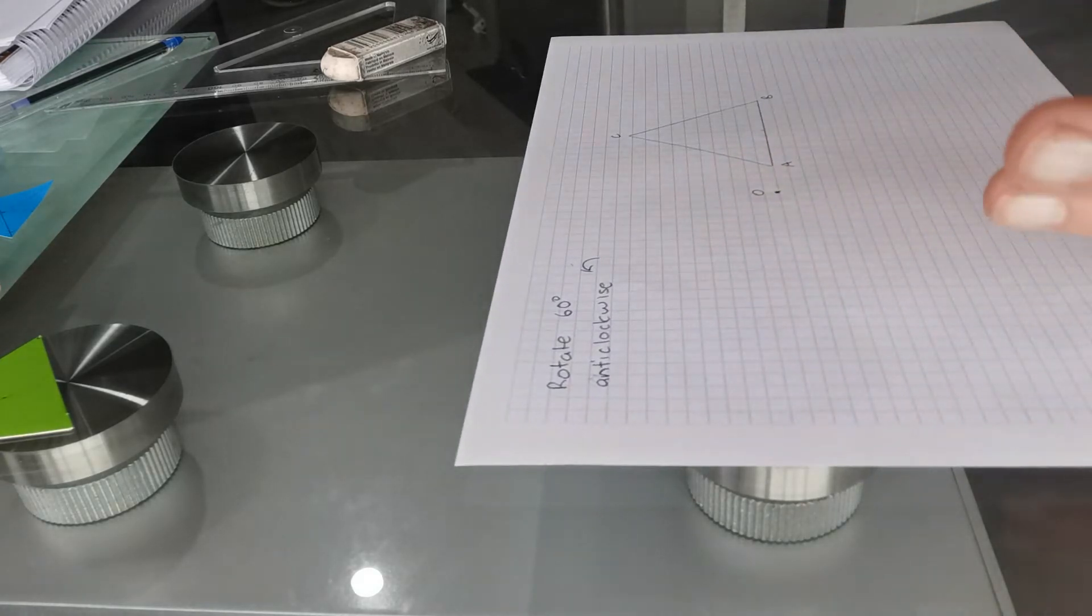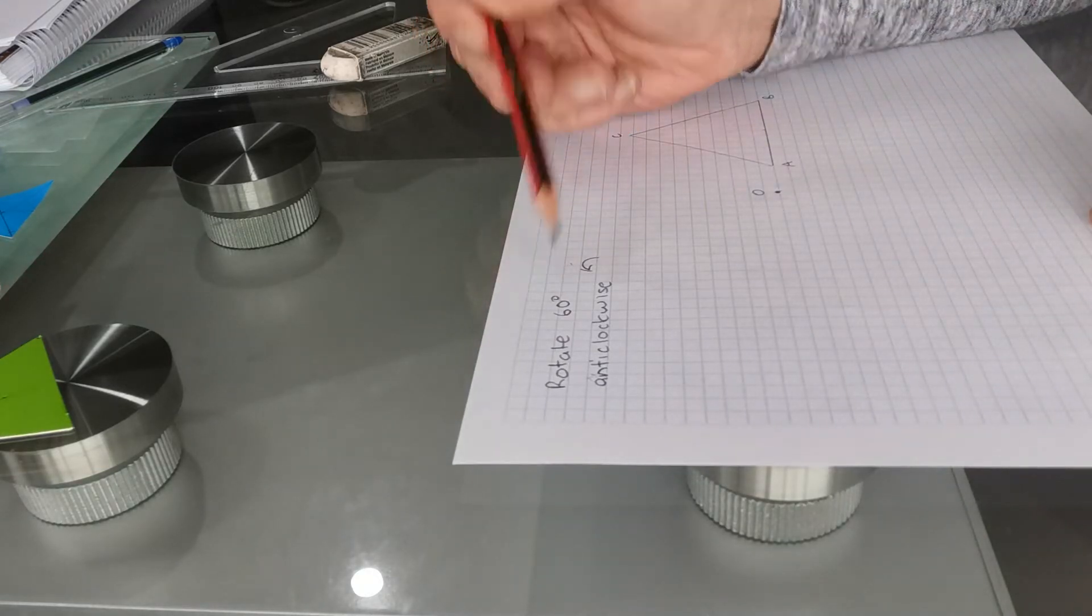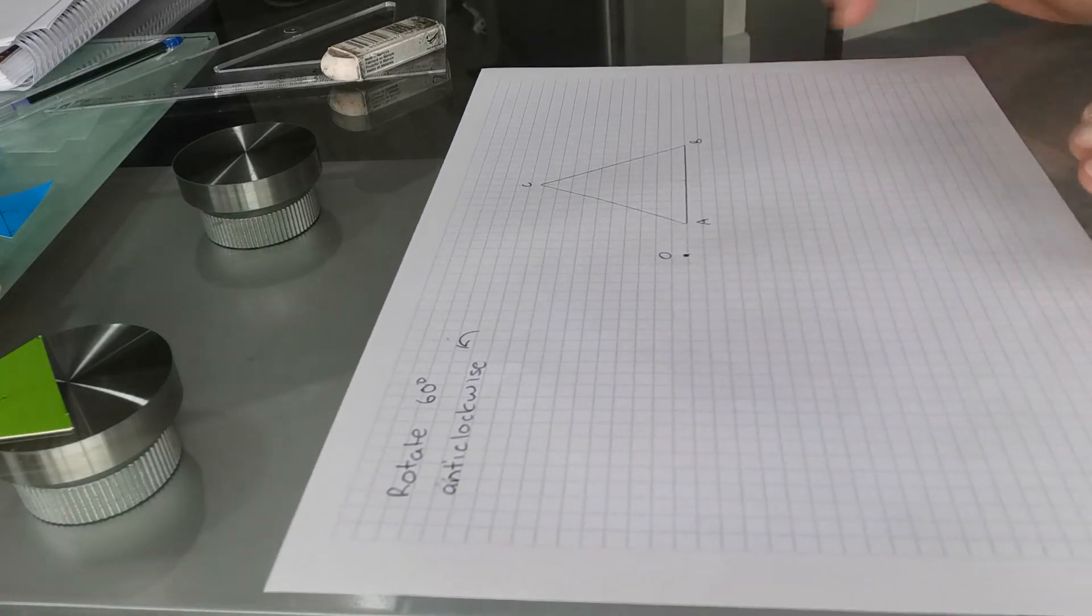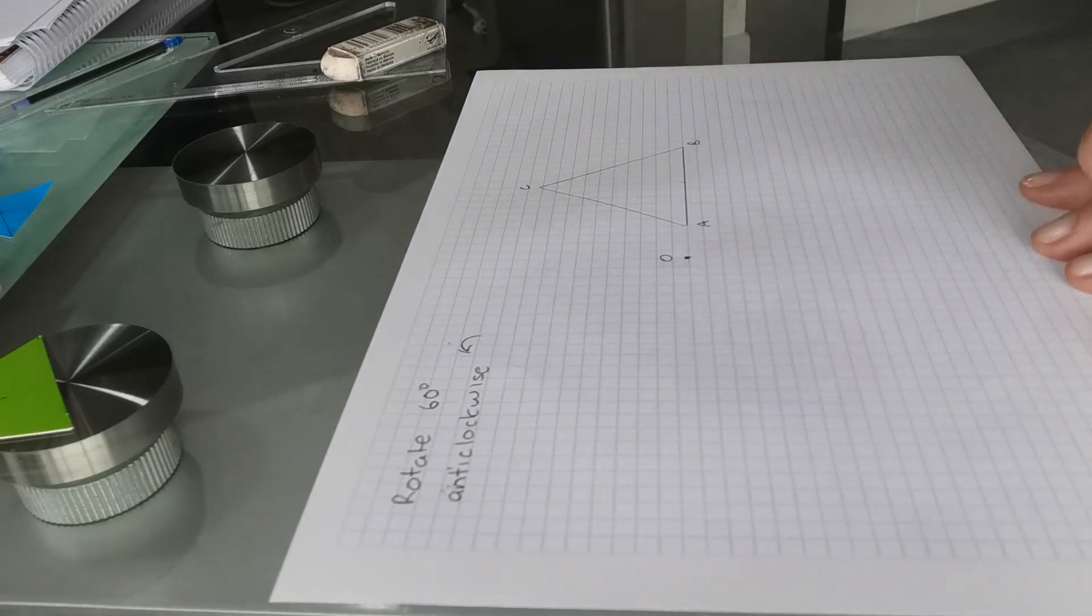So every time I do this I'm going to need three pieces of information: the direction, the degrees, and the center.